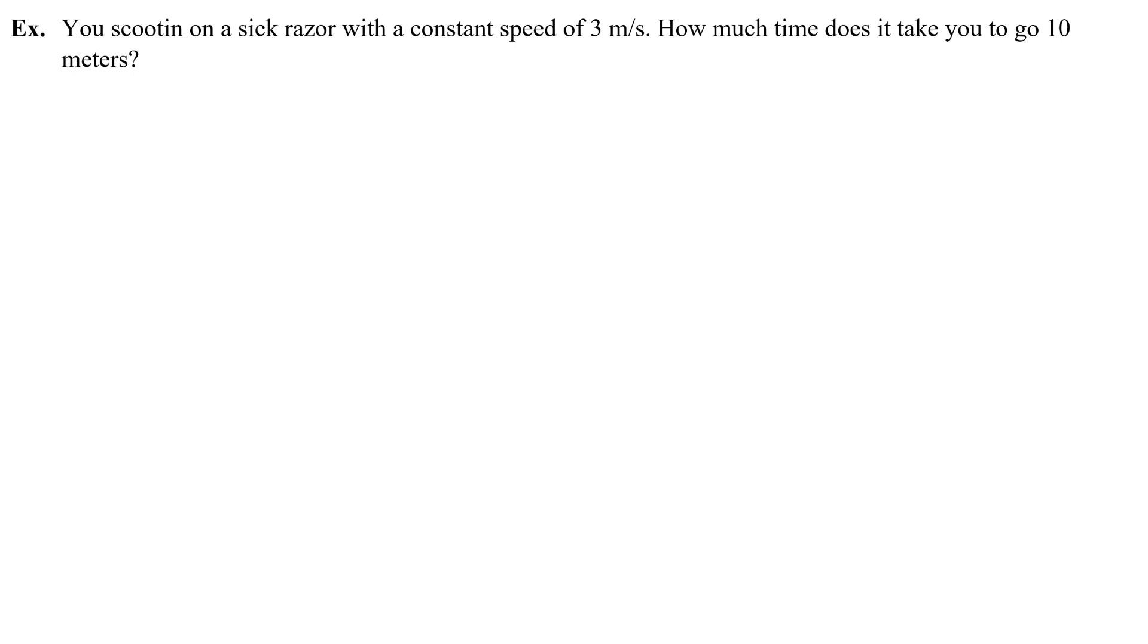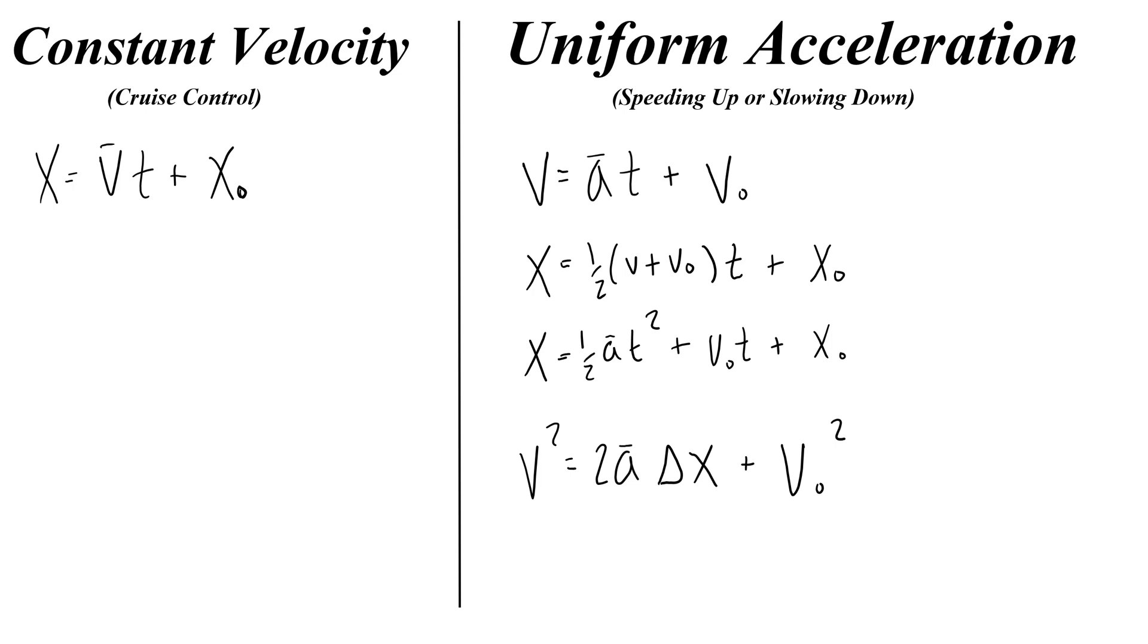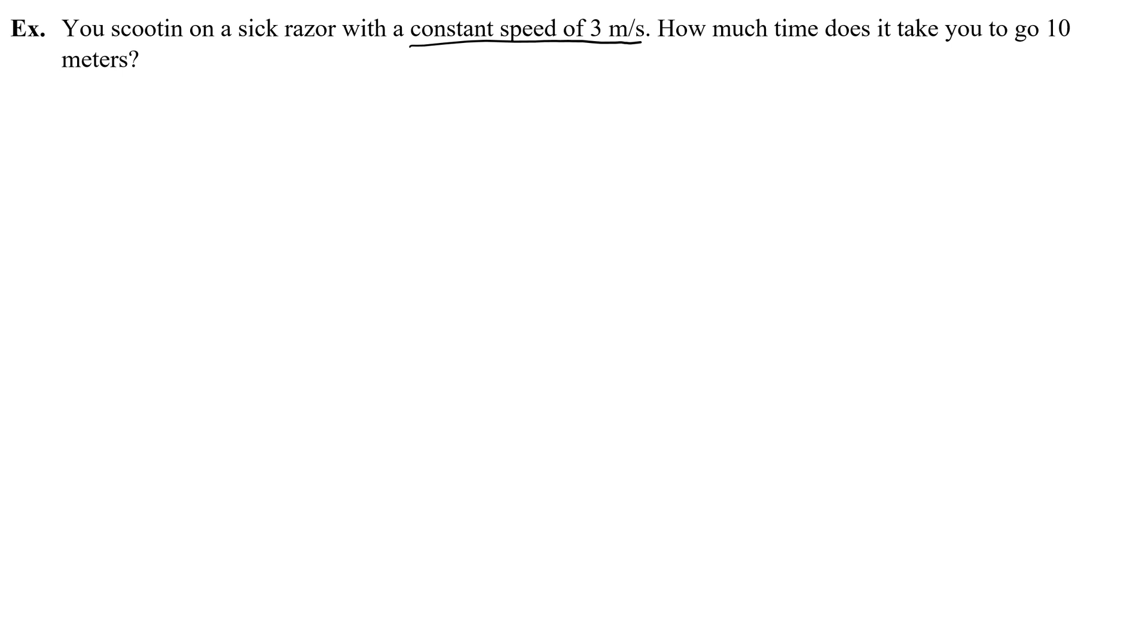You scootin' on a sick razor with a constant speed of 3 meters per second. How much time does it take you to go 10 meters? Let's start with the given information. Constant speed. There's something about constant. What does constant mean? Oh, yeah, constant speed, it's a constant velocity. That means I'm not speeding up or slowing down, which means I just need to use this one equation. That should be easy when it comes to the equation part. So, that 3 meters a second, since it's not changing, I can call that the average. The average velocity is 3. And 10 meters, so that means I could either write this as delta x equals 10 meters, or I'll say x-naught equals 0, x equals 10. Now I think about what's unknown. Time. So, time is the thing that I want to find.